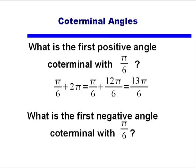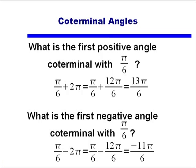To find the first negative angle coterminal with an angle, we subtracted a complete rotation. So instead of 360 degrees, we'll be subtracting 2π. So we take π/6 and we subtract from it 2π, again finding a common denominator. And we end up with the first negative angle that's coterminal with π/6 as negative 11π/6.